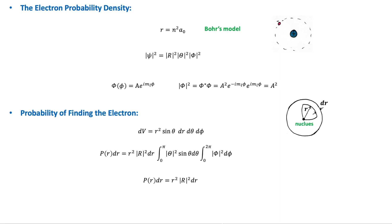Quantum theory modifies this in two ways. First, it shows that there is no definite value for r, theta, or phi, but only a probability of finding the electron at a certain location. This is a consequence of the wave nature of the electron.